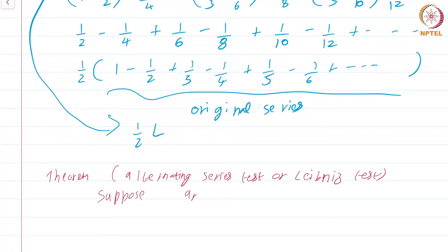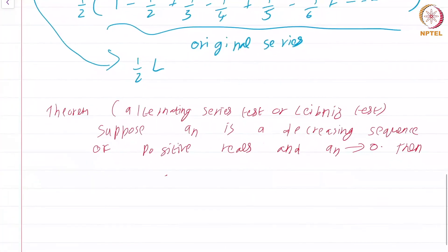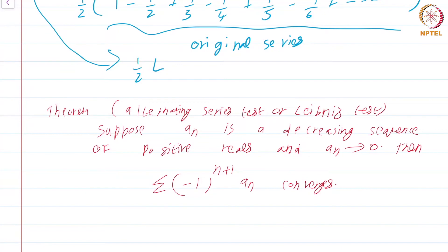Theorem (Alternating Series Test / Leibniz Test): Suppose a_n is a decreasing sequence of positive reals and a_n converges to 0. Then summation (-1)^(n+1) a_n converges. That is, if you have a series of alternating terms such that after removing the sign the sequence a_n goes to 0, and a_n is non-negative and decreasing, then the alternating series converges.